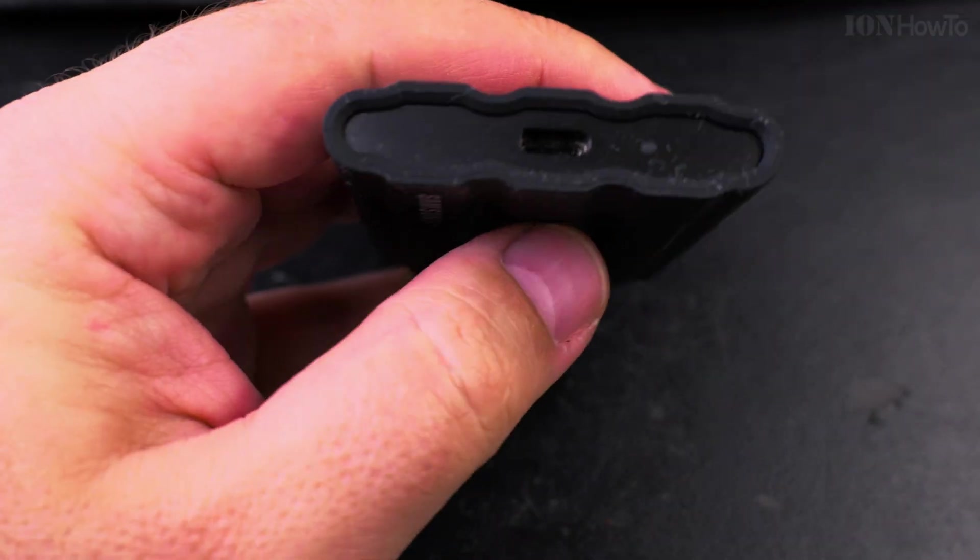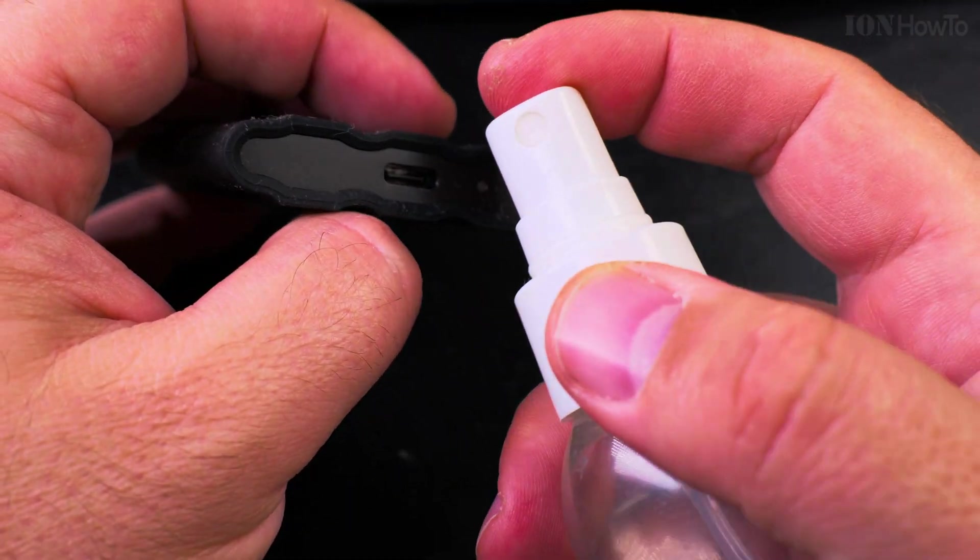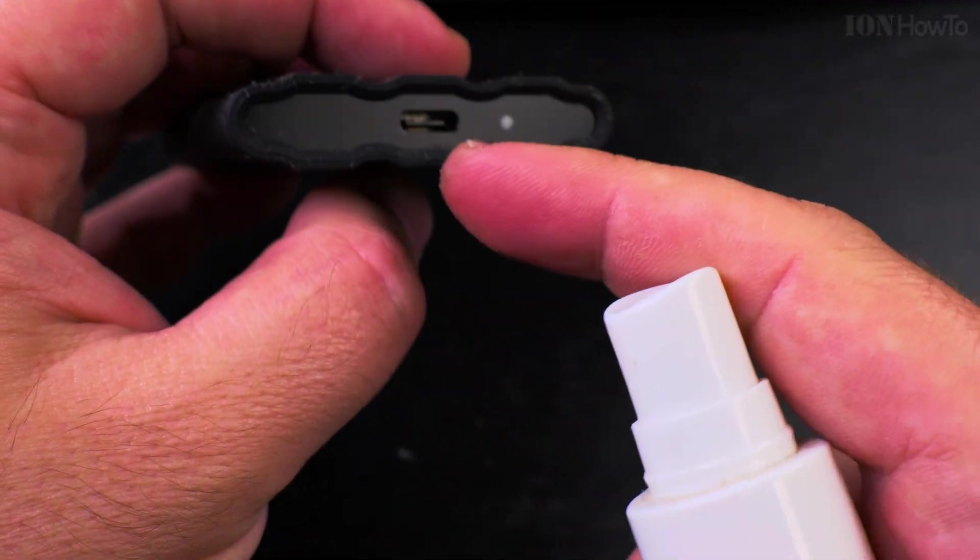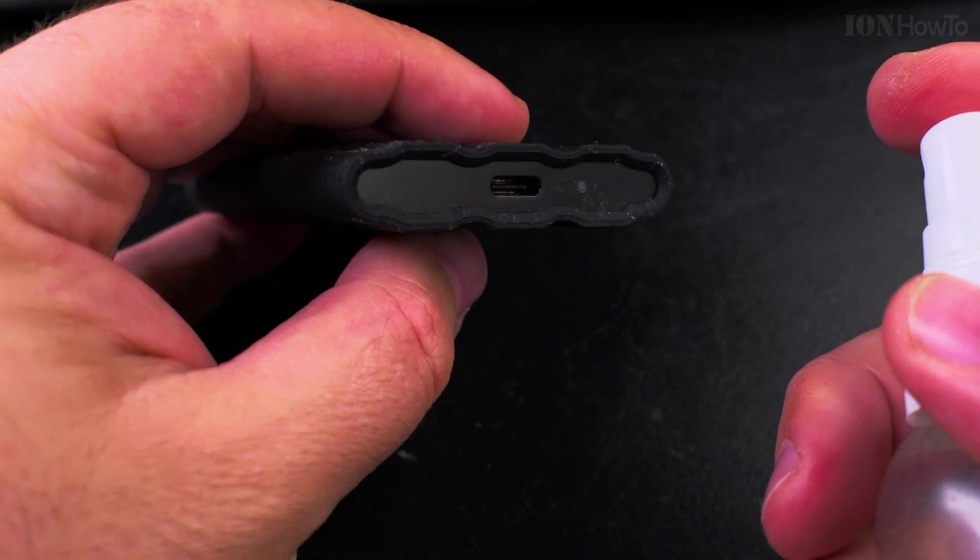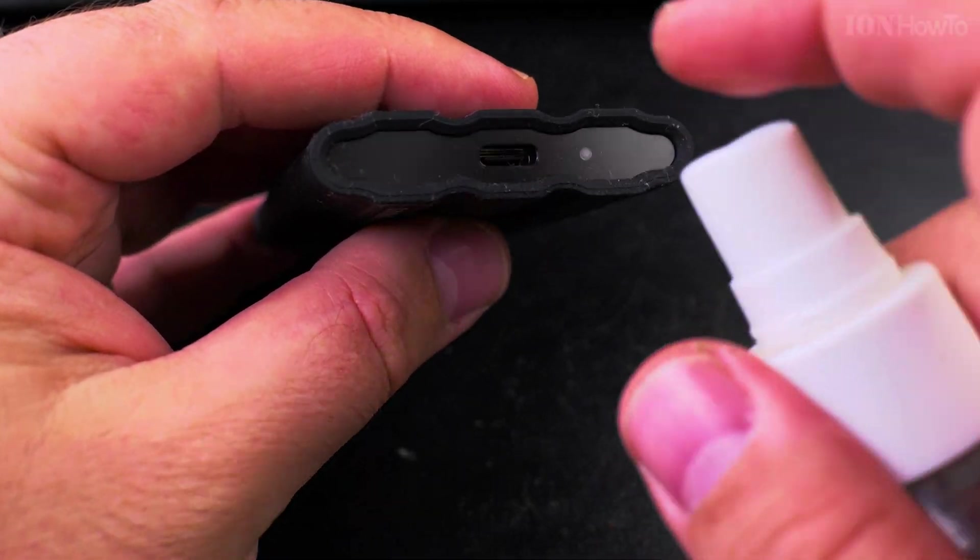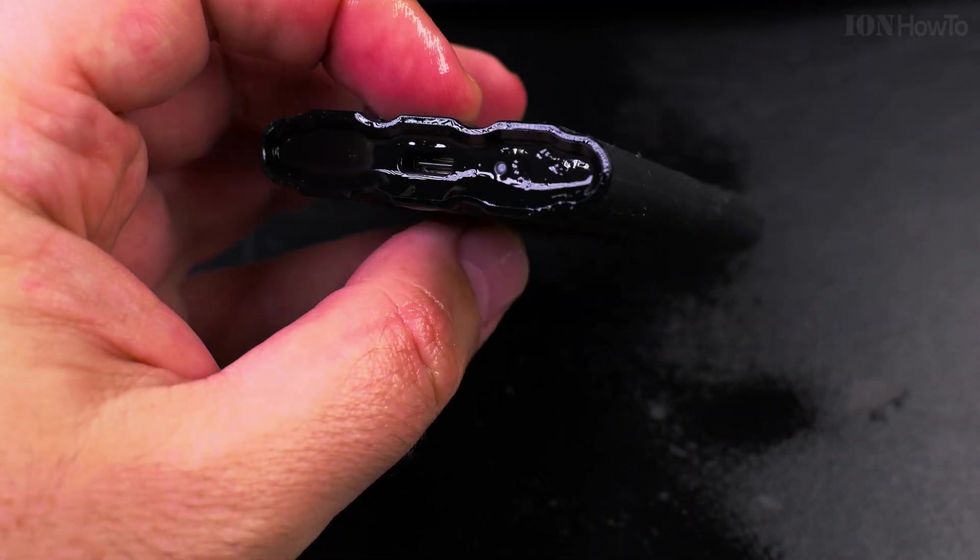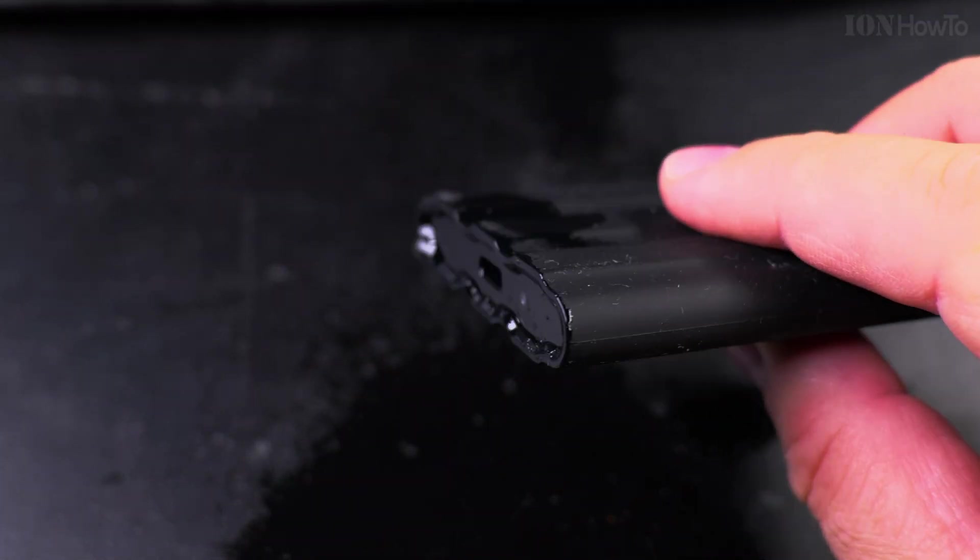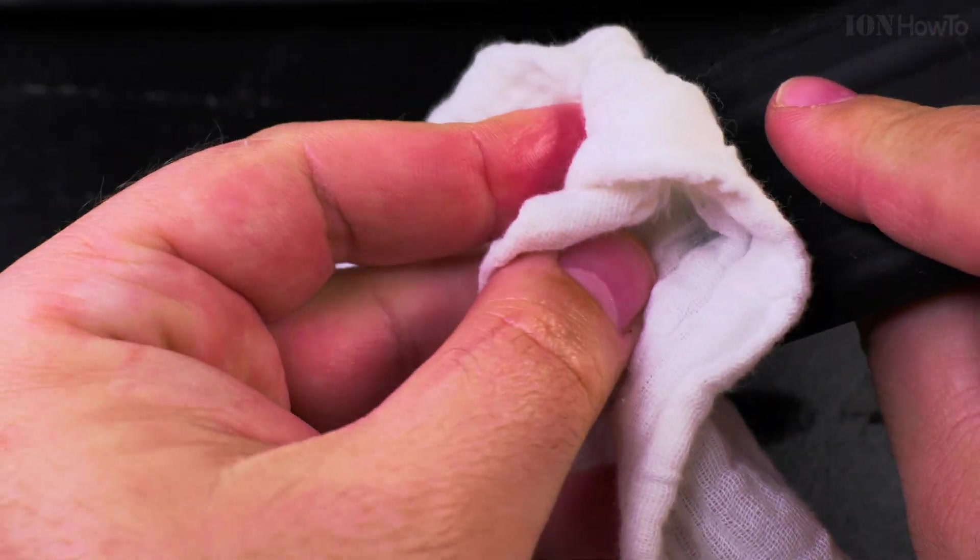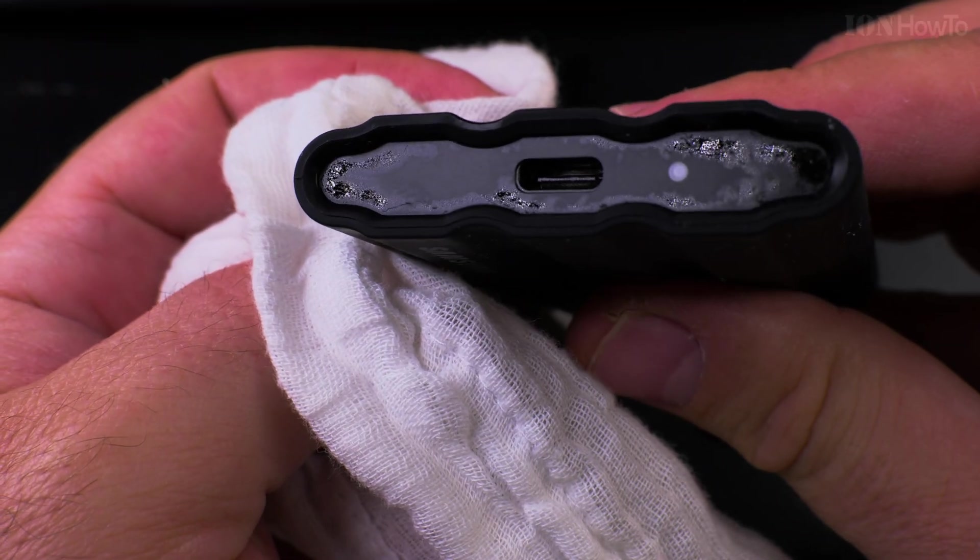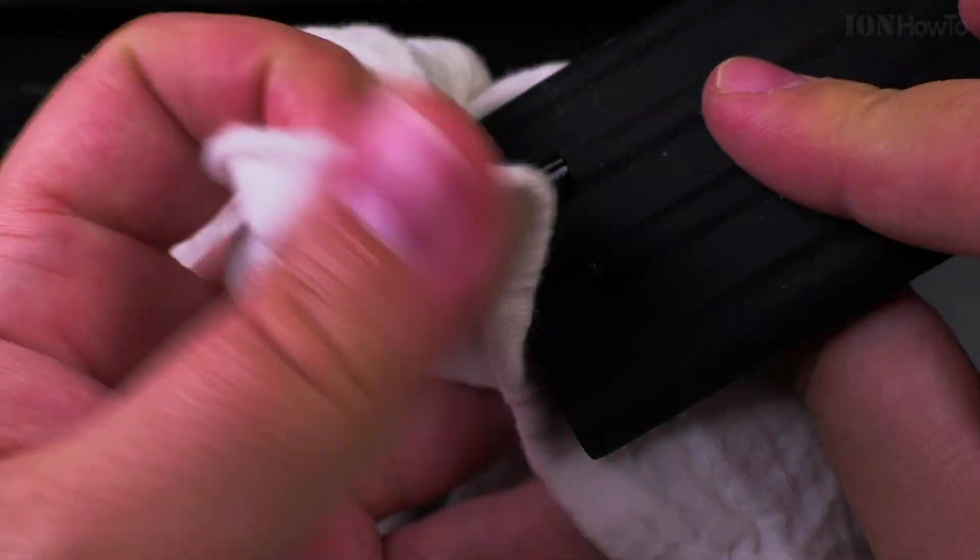So first thing that I did was to use isopropyl alcohol to spray it in the USB port there, trying to remove the water like that, and then to clean it. Isopropyl alcohol will evaporate really fast.